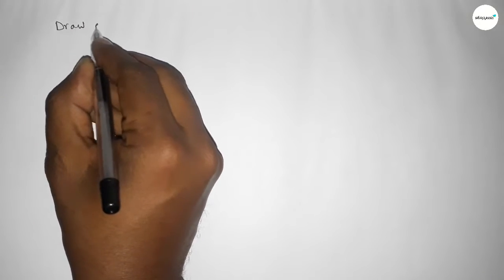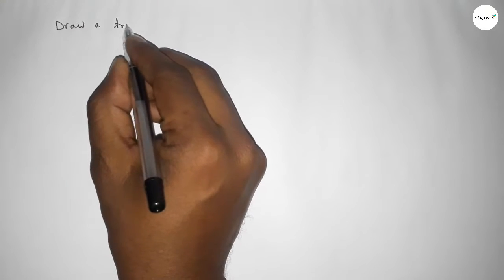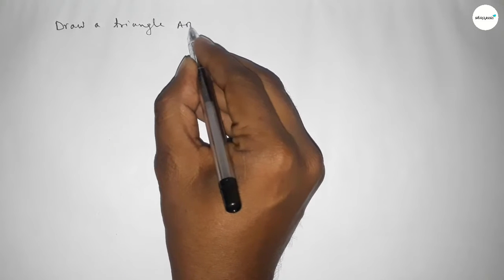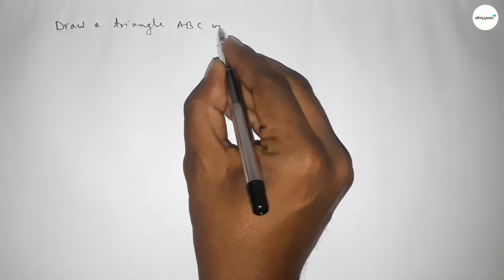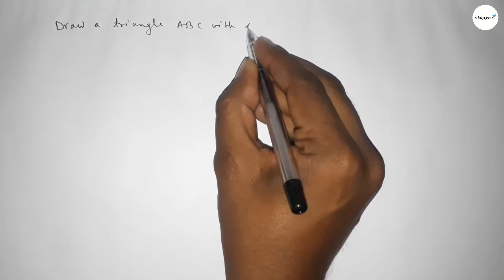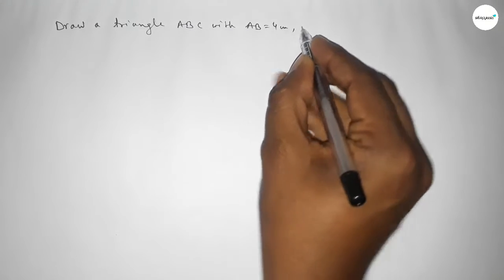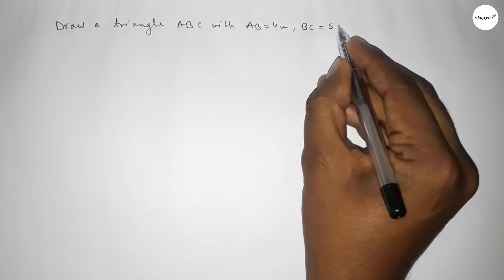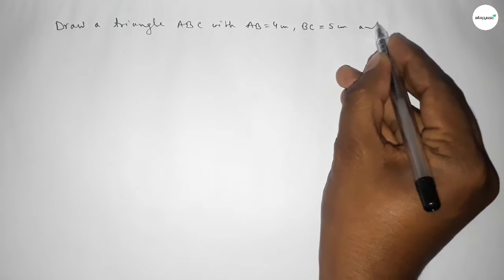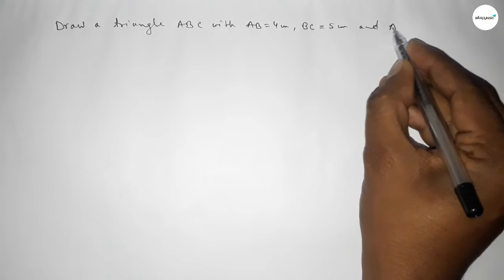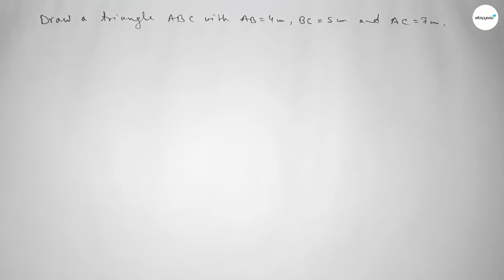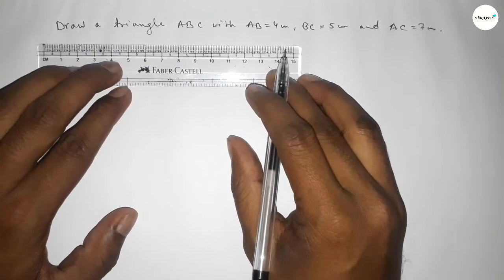Hi everyone, welcome to SI Share Classes. Today in this video we have to draw a triangle ABC with AB equal to 4 centimeter, BC equal to 5 centimeter, and AC equal to 7 centimeter. So let's start the video.